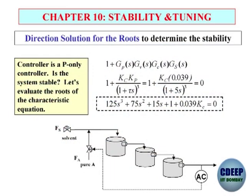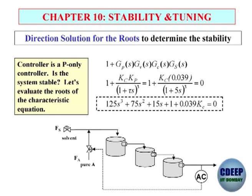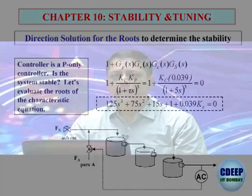That approach is not always practical because in practice you need transfer functions — the process transfer function, the valve transfer function, and the sensor transfer function. If you know all these pretty well, you can write down the characteristic equation and determine K_c. But when you are facing a big, complex plant, who will give you G_p, G_v, G_s? Because you do not have knowledge of these transfer functions, you go for an experimental procedure to determine K_c at the critical gain. That is why Ziegler-Nichols presented an experimental procedure — in practice with complex plants you cannot get the transfer function.